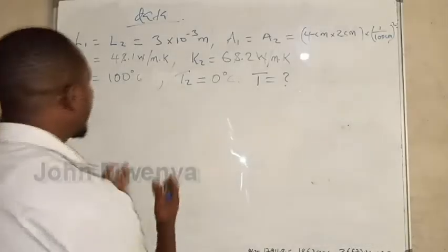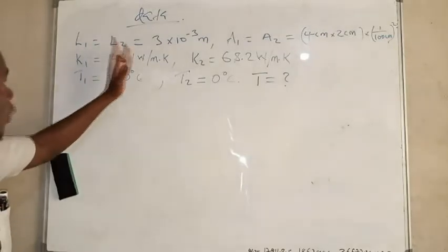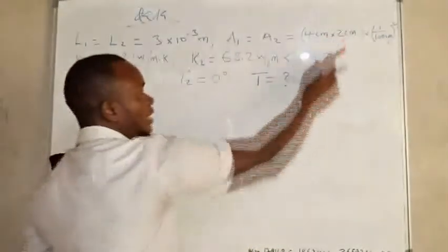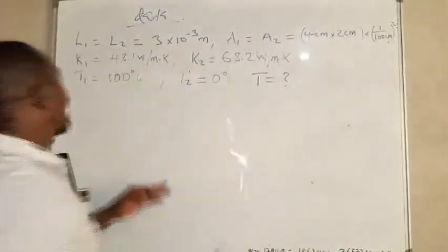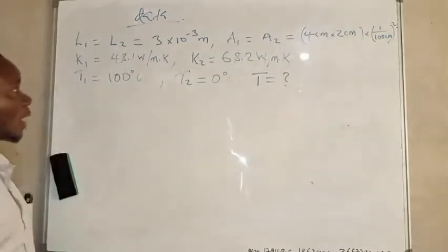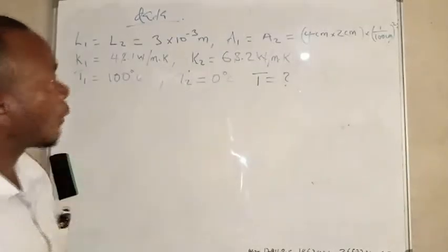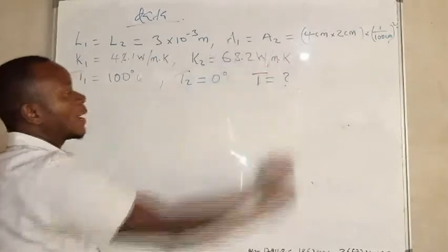So this is the question we are going to answer in this video. The data given is: the thickness L1 equals L2 equals 3 times 10 to the power negative 3. The area is given by the stated dimensions, converted to square meters using the appropriate factor. The thermal conductivity of plate 1, K1, is 48.1 watts per meter per Kelvin, and the thermal conductivity of plate 2, K2, is 68.2 watts per meter per Kelvin.